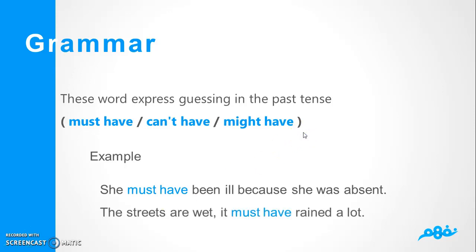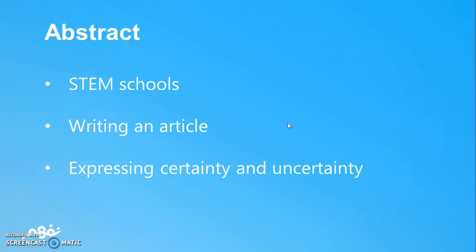The streets are wet, it must have rained a lot. The streets are wet, that makes me feel must have. And here we are, the abstract of our lesson that we finished. First, we talked about STEM schools and know the shortcut. Second, writing an article. We have to talk about how to write a perfect article. And finally, we talked about expressing certainty and uncertainty.